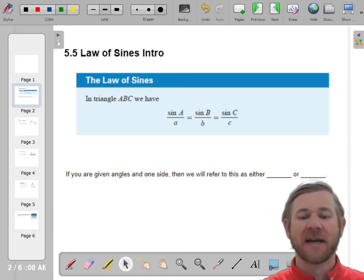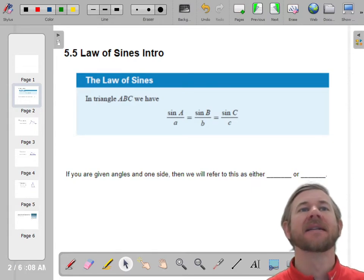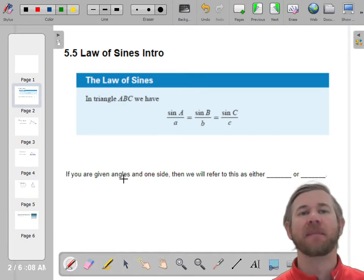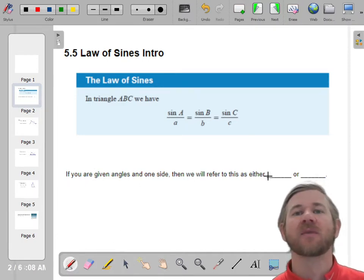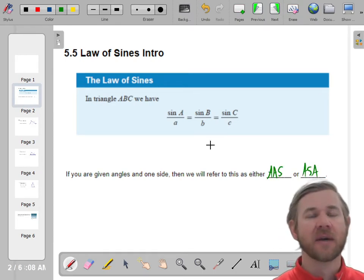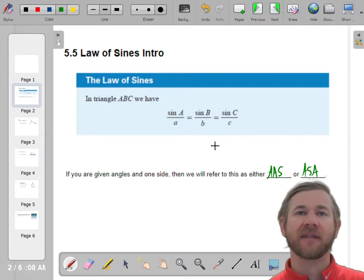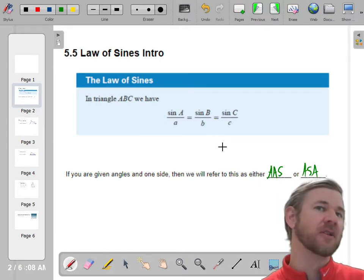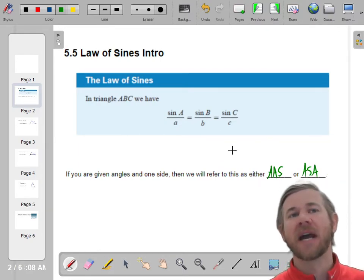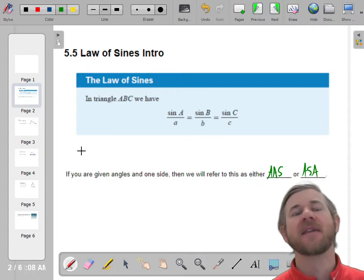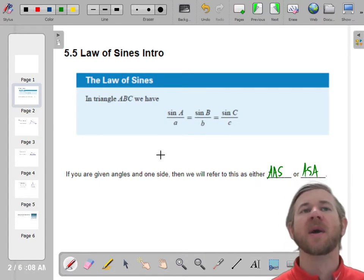So the first thing that we want to talk about is if it says the angles and one side. When I use the law of sines is when we have angle, angle, side, or angle, side, angle. So the information that you are given determines whether or not you can use the law of sines. And basically the way I remember this is if you have an angle side pair is when you're going to use the law of sines.